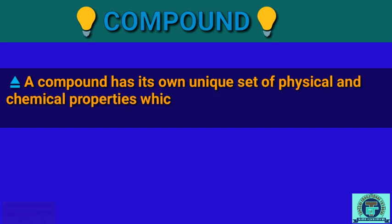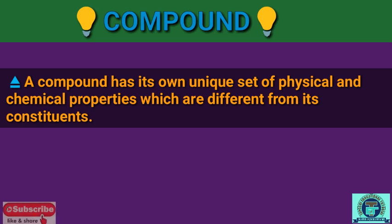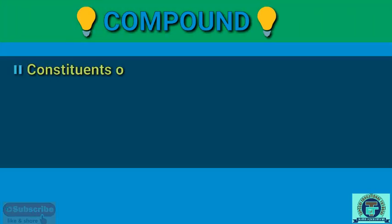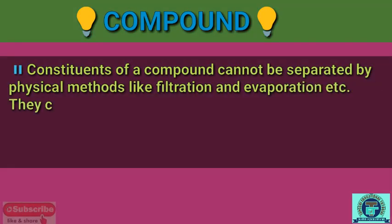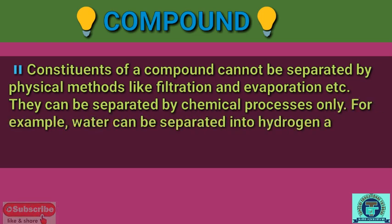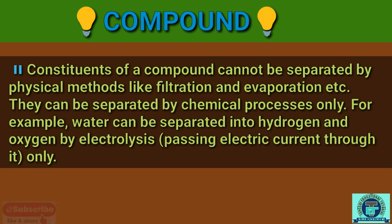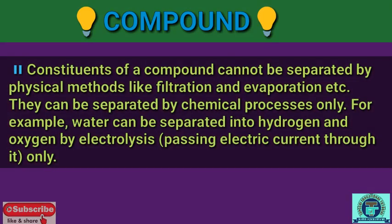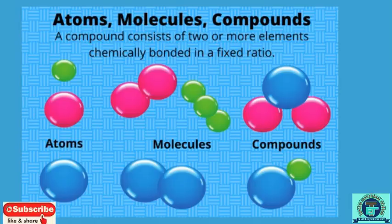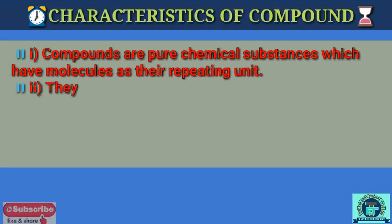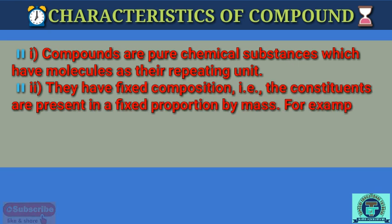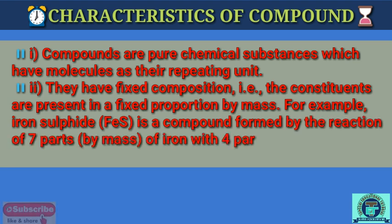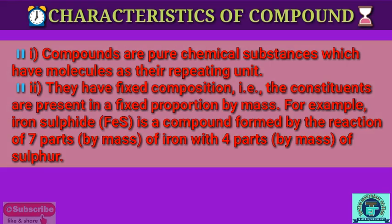A compound has its own unique set of physical and chemical properties, which are different from its constituent elements. The constituents of a compound cannot be separated by physical methods like filtration or evaporation — they can be separated by chemical processes only. For example, water can be separated into hydrogen and oxygen by electrolysis, that is, by passing electric current through it.